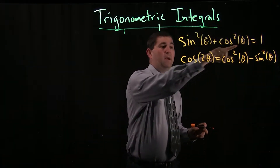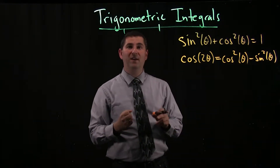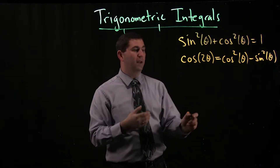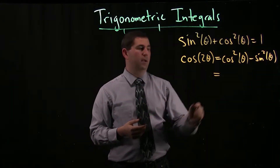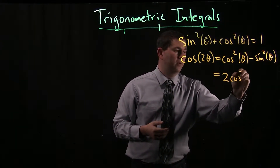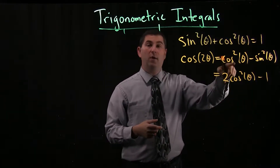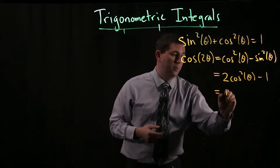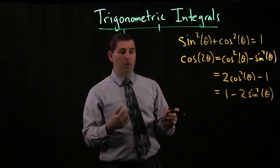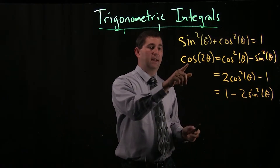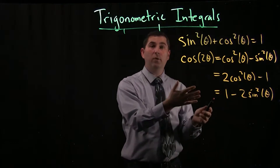Now if you use the Pythagorean identity, you can replace either one of these cosine or sine squareds with something written in terms of the other. For example, if I replace sine squared with one minus cosine squared, then I end up with two cosine squareds minus one. On the other hand, if I replace cosine squared with one minus sine squared, I end up with one minus two sine squared theta. So this gives us a way of translating from cosines of a double angle into either sines or cosines or both, but with squares.